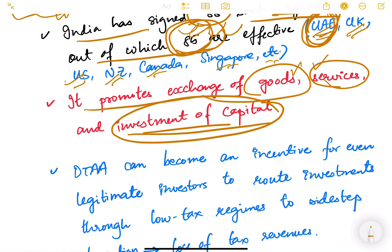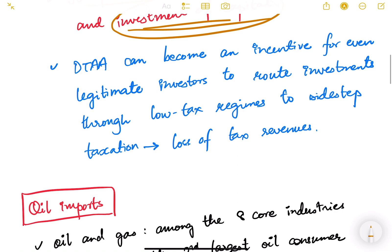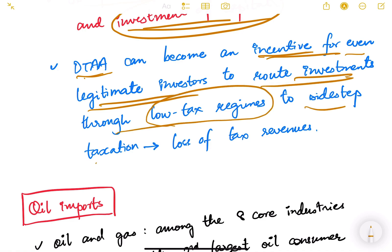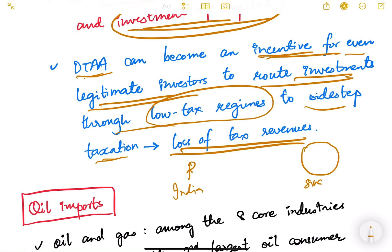However, a Double Taxation Avoidance Agreement can become an incentive even for legitimate investors to route investments through low-tax regimes to sidestep taxation, causing loss of tax revenues. For example, consider an Indian person who wants to invest money in India. Singapore is a country with lower income tax rates compared to India.